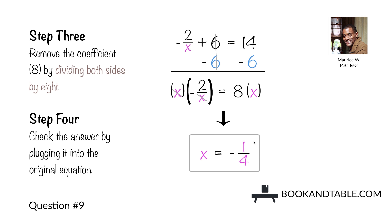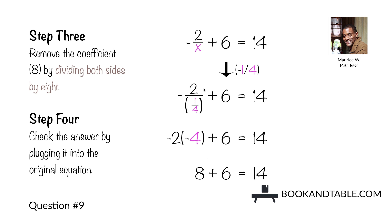We check this by plugging it into the original equation. Negative 2 divided by a fraction is the same as multiplying the numerator by the reciprocal of the denominator. So negative 2 times the reciprocal of negative 1/4, which is negative 4, gives negative 2 times negative 4, equal to positive 8. 8 plus 6 is equal to 14. So when x is equal to negative 1/4, the left side equals the right side — x is equal to negative 1/4.